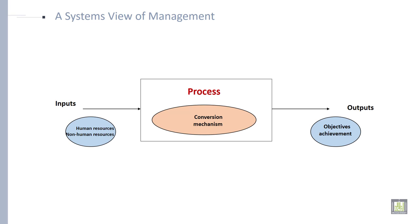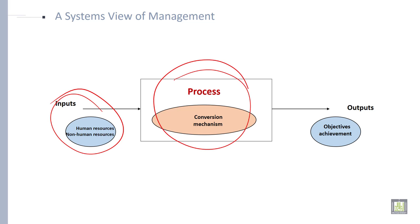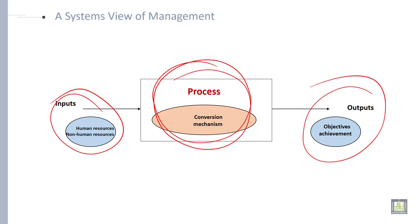Management — as is clear from this picture — human resource and non-human resource are examples of inputs. The process, like the conversion mechanism, is called process, and output like achievement of objectives is called output. So this is an example of management.